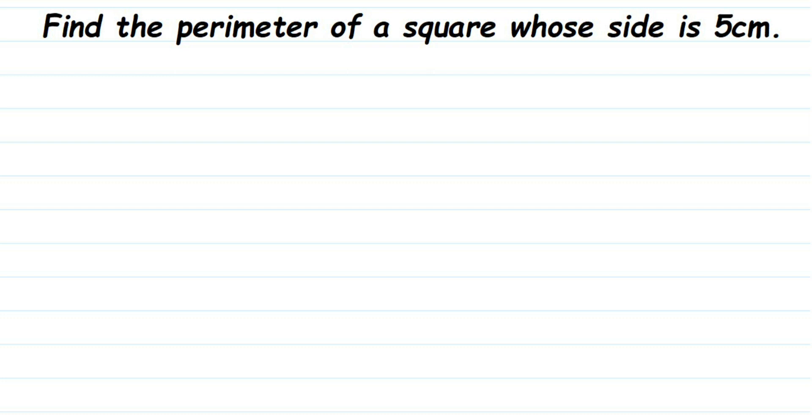Hello everyone, here is a question on squares. Find the perimeter of a square whose side is 5 centimeters. They have given the side of the square which is 5 centimeters. What do we have to find out?